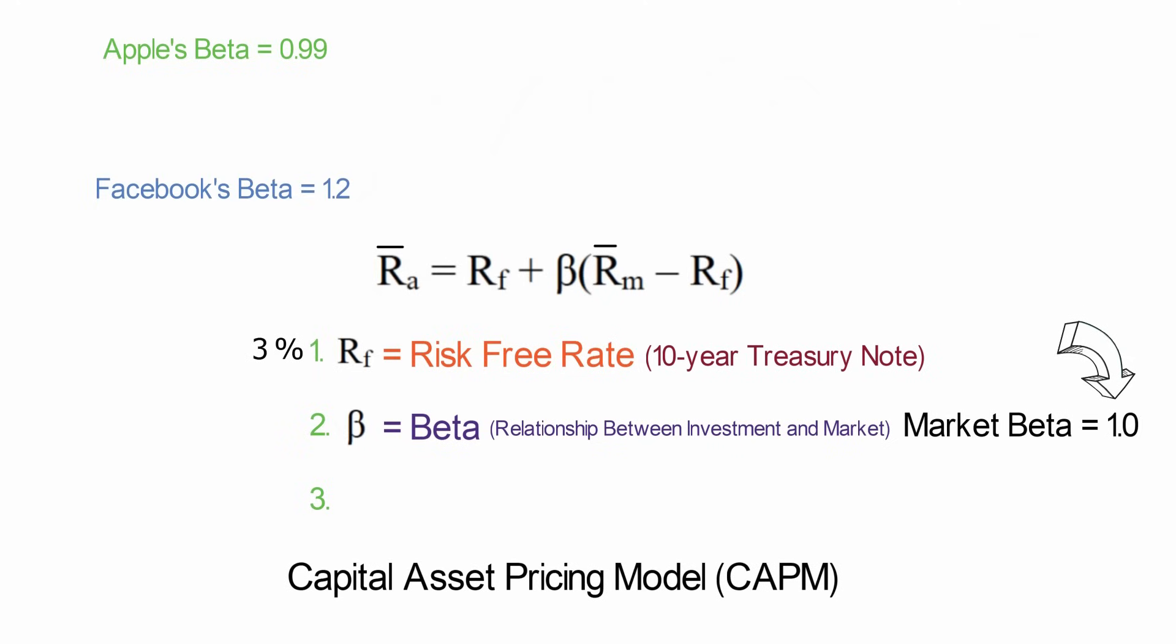The closer the beta is to 1, the more the stock moves like the market does.